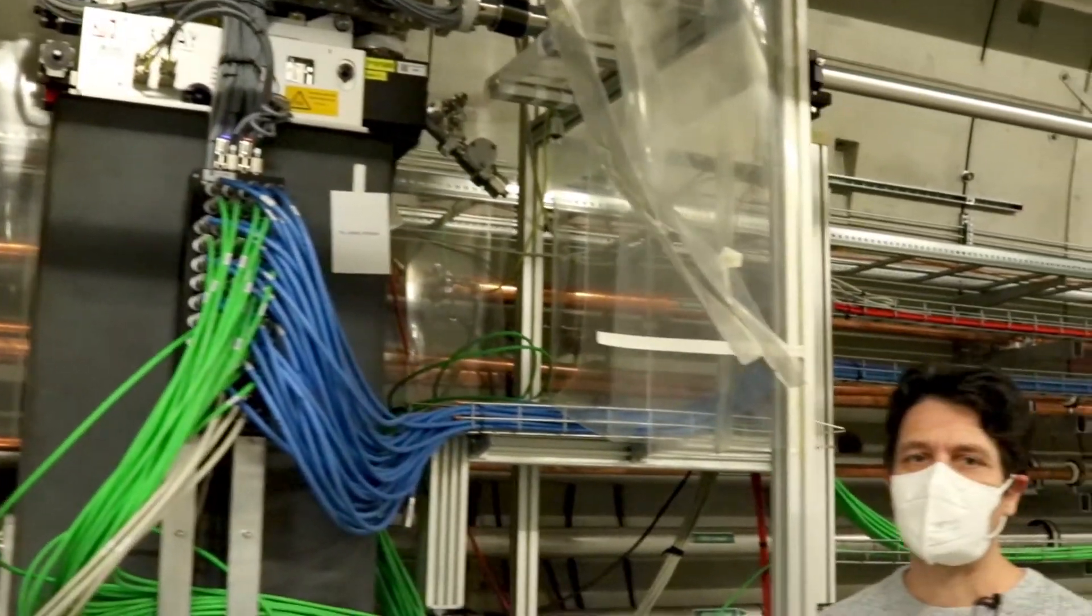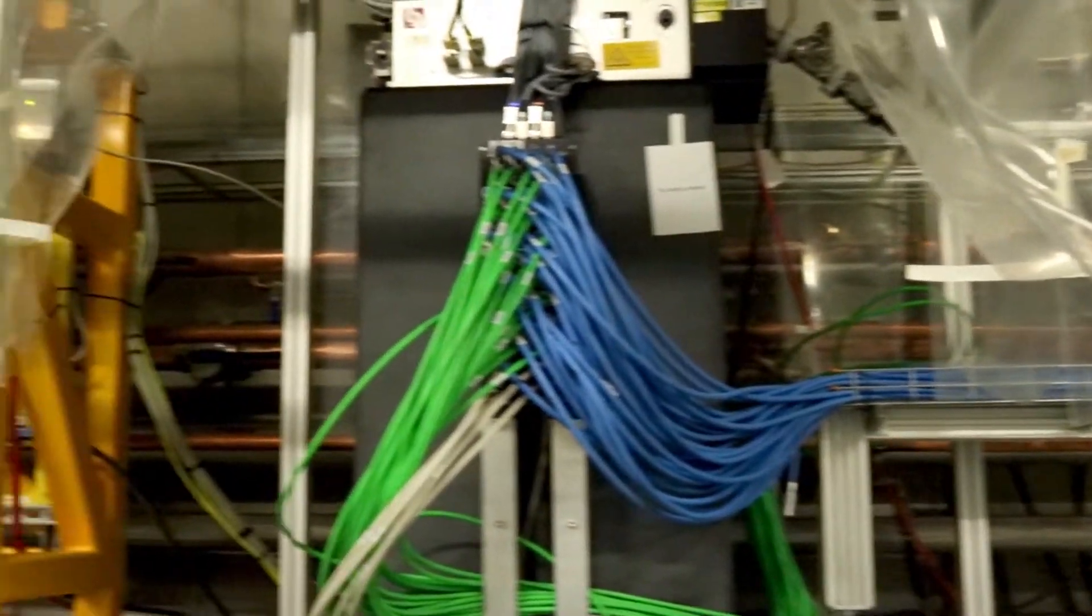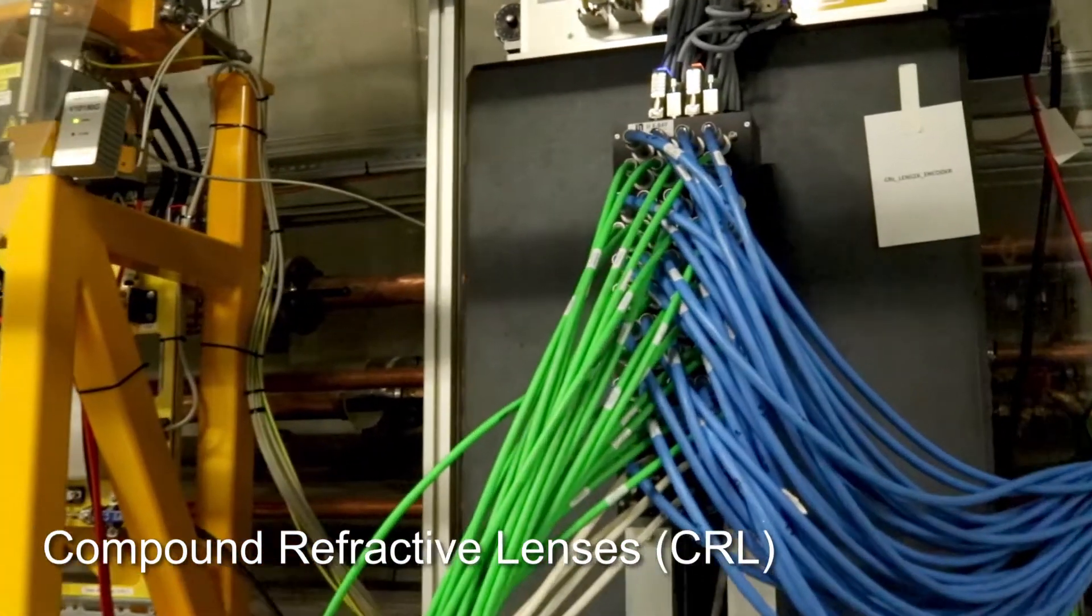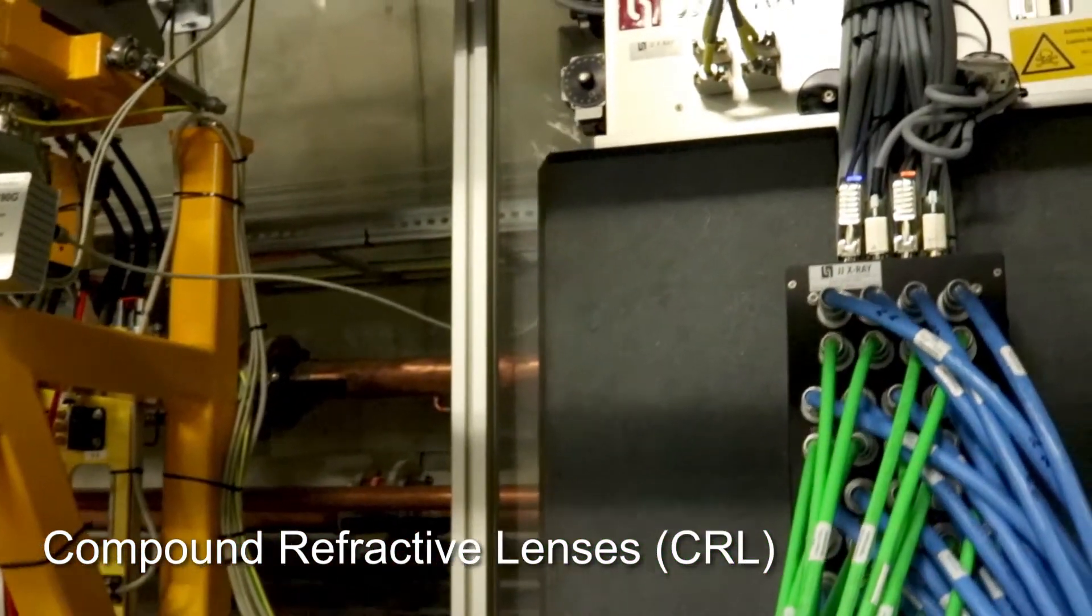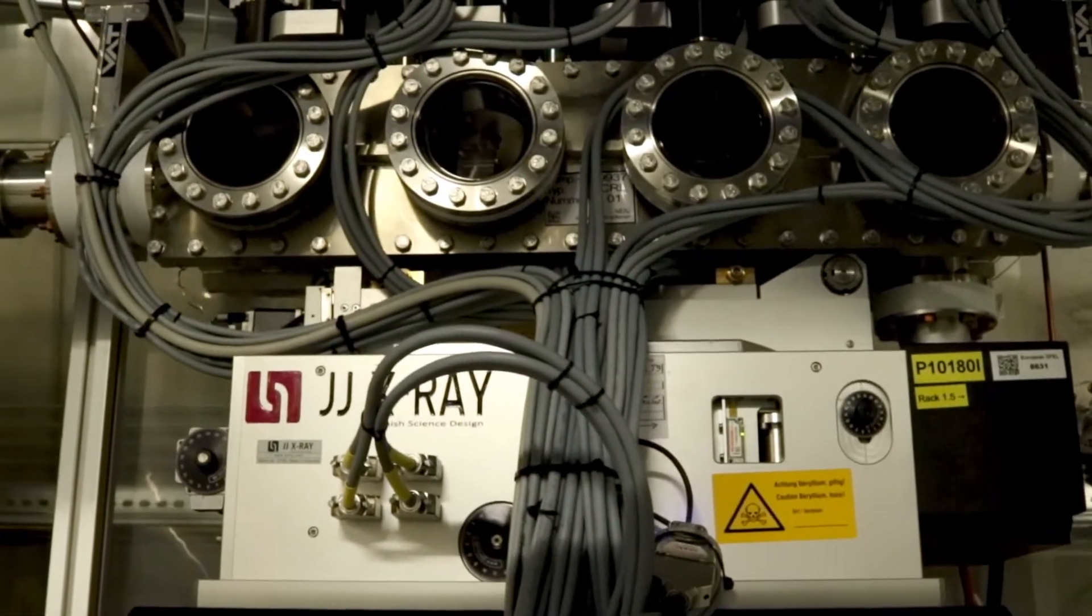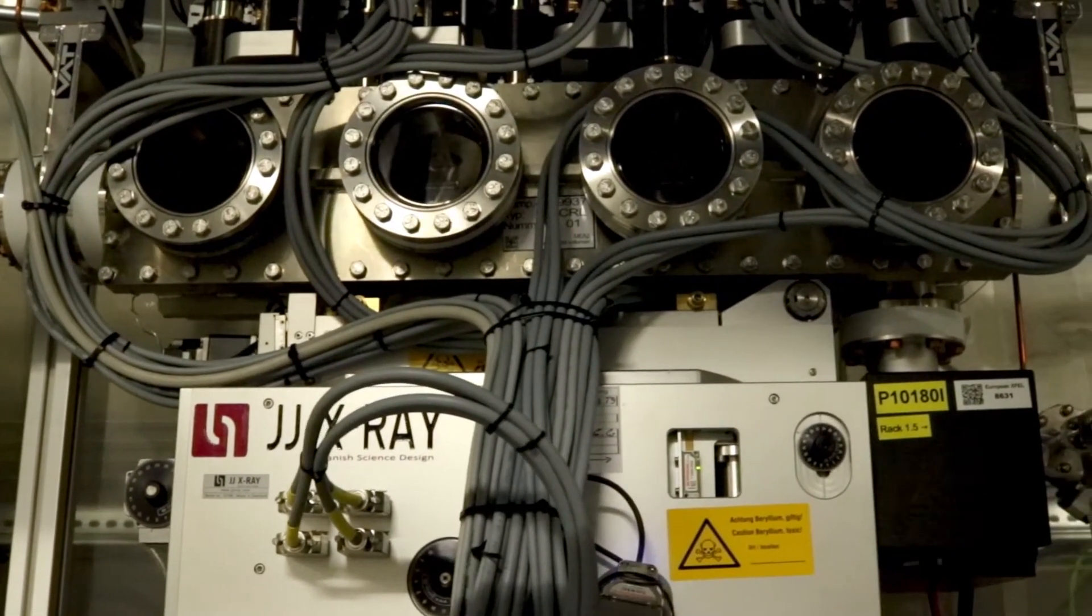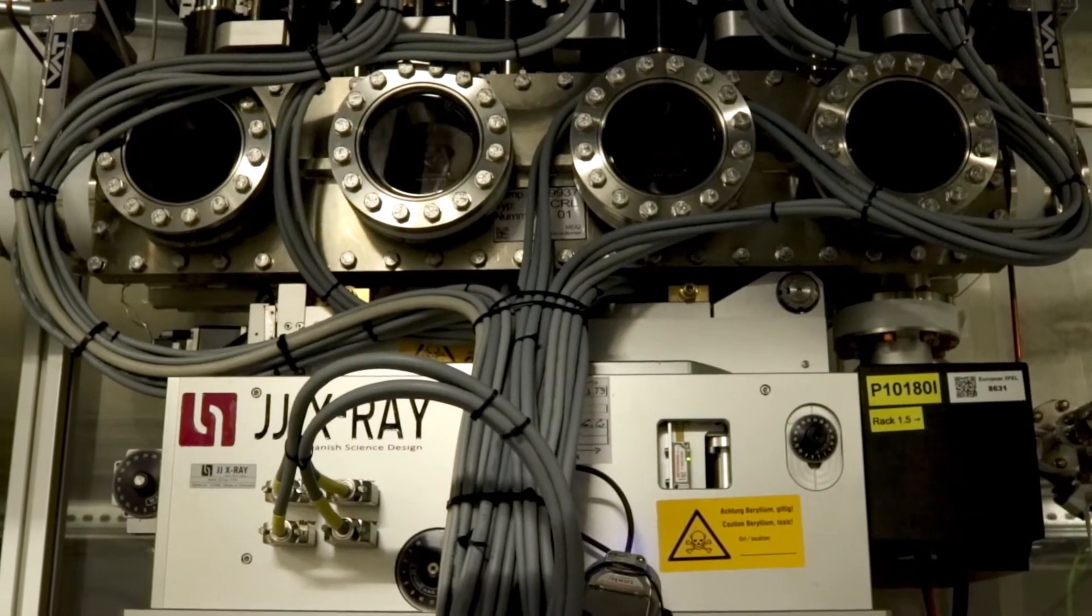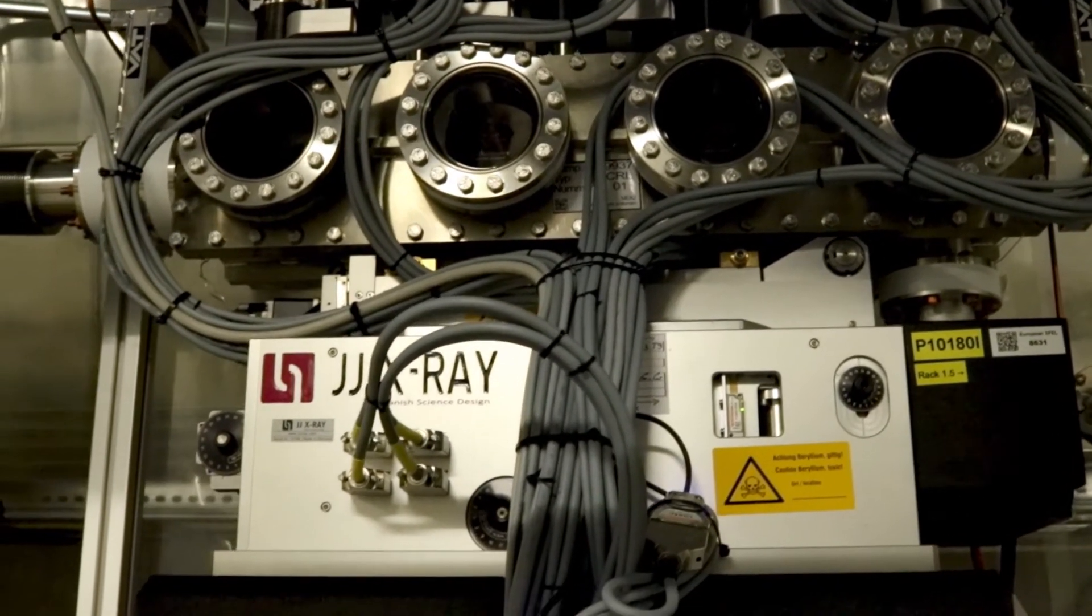Here we have the beryllium lenses. These are compound lenses. They can be inserted or not in the beam. If you put all of them out, the beam goes unfocused to the end of the tunnel.